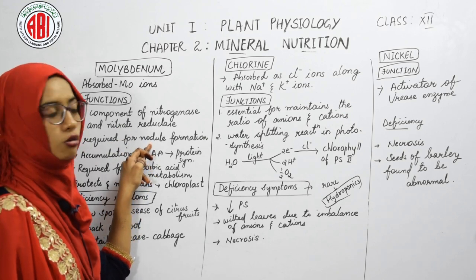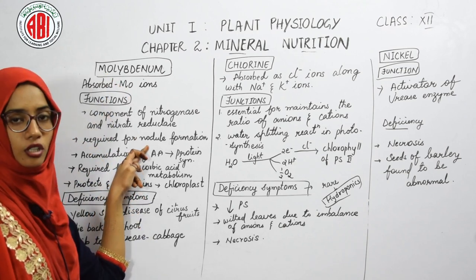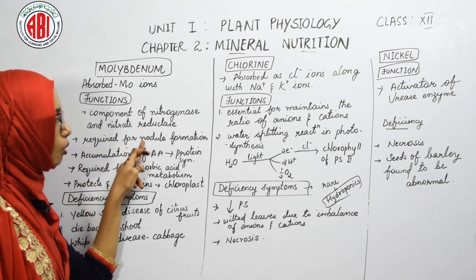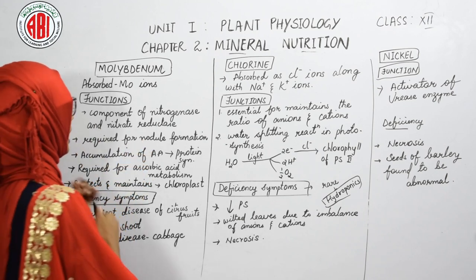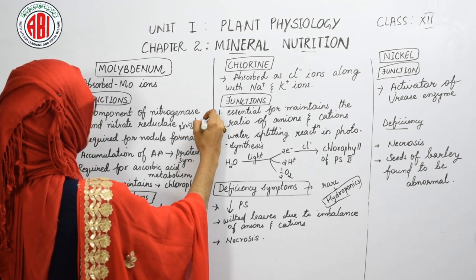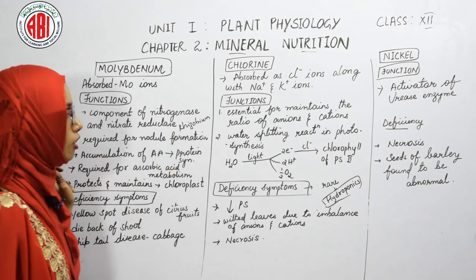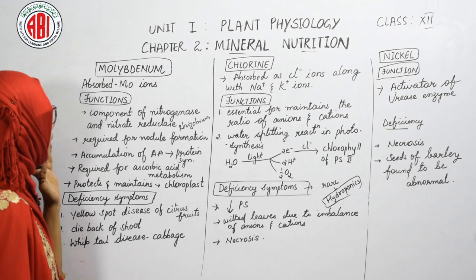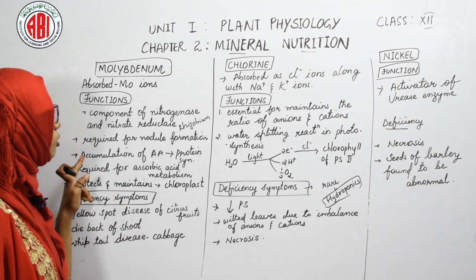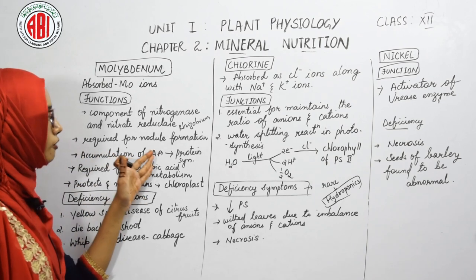Molybdenum is also required for nodule formation. In the presence of molybdenum ions, the cortical cells of the root divide to form a nodule, which is colonized by the bacteria Rhizobium. This symbiotic association between Rhizobium and the nodule facilitates nitrogen fixation.